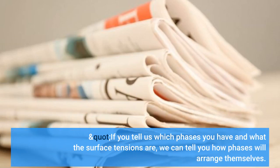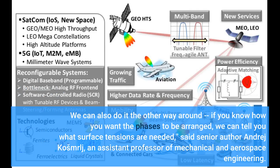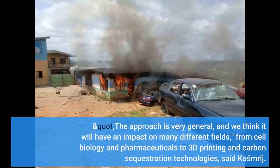"If you tell us which phases you have and what the surface tensions are, we can tell you how phases will arrange themselves. We can also do it the other way around — if you know how you want the phases to be arranged, we can tell you what surface tensions are needed," said senior author André Cosmar-LJ, an assistant professor of mechanical and aerospace engineering. "The approach is very general, and we think it will have an impact on many different fields, from cell biology and pharmaceuticals to 3D printing and carbon sequestration technologies."